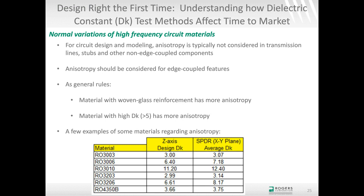As a general rule, materials with woven glass reinforcement are more anisotropic, and higher dielectric constant materials are more anisotropic. RO3003 (z-axis 3.00, x-y plane 3.07 by SPDR) shows very little anisotropy. RO3006 shows a bigger difference, and RO3010 shows a very significant difference. Comparing RO3003 to RO3203 — the same material except 3203 has glass reinforcement — the 3203 has slightly more anisotropy, confirming the glass effect.